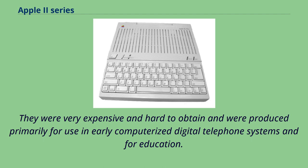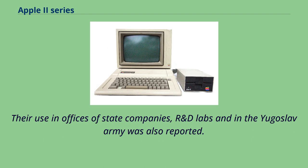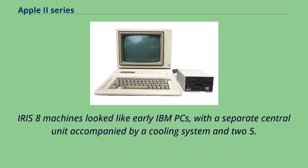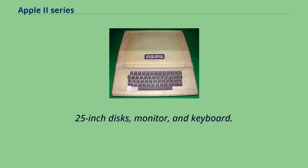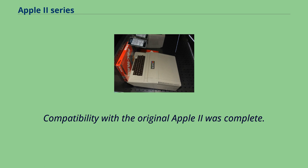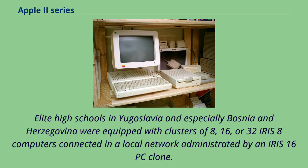Iris 8 machines looked like early IBM PCs, with a separate central unit accompanied by a cooling system and two 5.25-inch disks, monitor, and keyboard. Compatibility with the original Apple II was complete. Elite high schools in Yugoslavia and especially Bosnia and Herzegovina were equipped with clusters of 8, 16, or 32 Iris 8 computers connected in a local network administrated by an Iris 16 PC clone. The number of Iris 8s produced is believed to be on the order of 10,000 to 20,000.